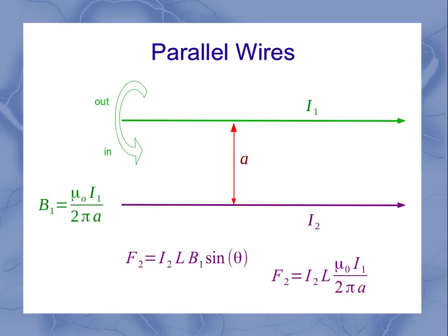So that means down here at the location of wire 2, it's going into the page. So I use my little green X's here to show the magnetic field from current 1 on the location of where current 2 is, is going into the page.